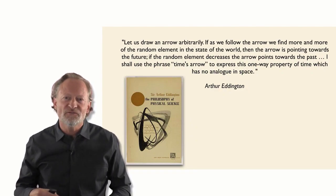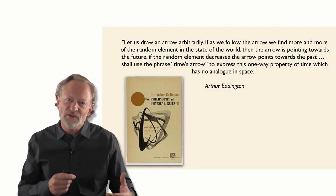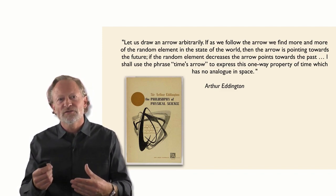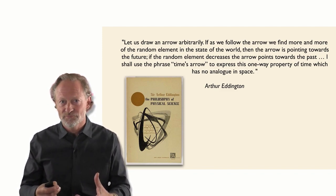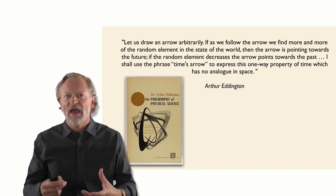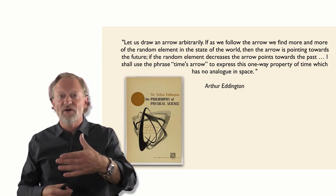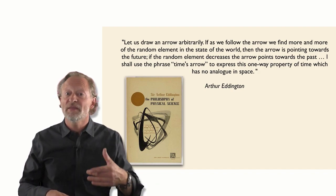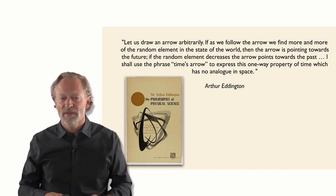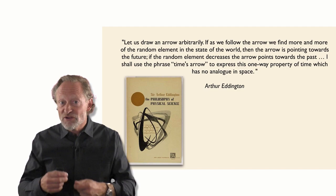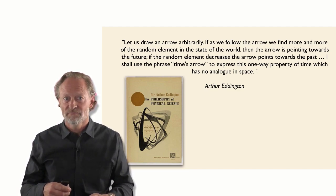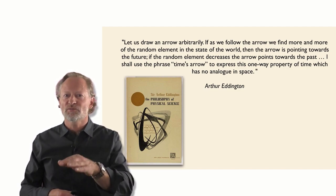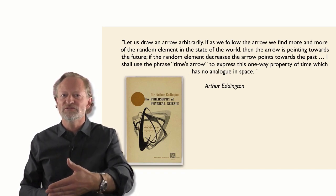Arthur Eddington famously described this phenomenon — the arrow of time — by asking us to consider an arrow. If we follow that arrow and find more and more of the random element in the state of the world, then that points towards the future. But if the random element decreases, the arrow points towards the past. And time's arrow expresses the one-way property of time.